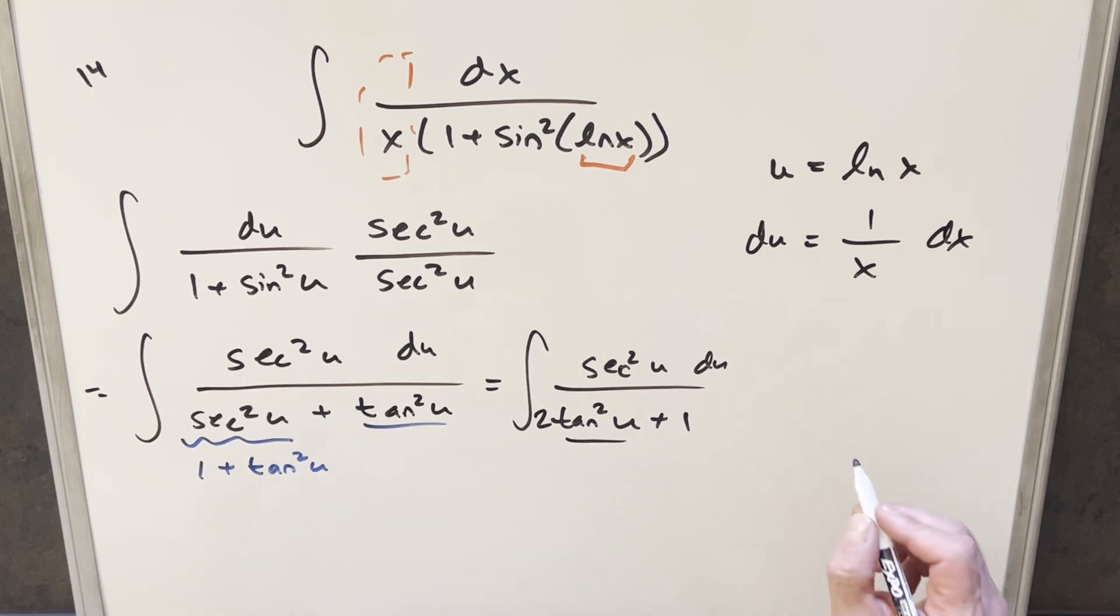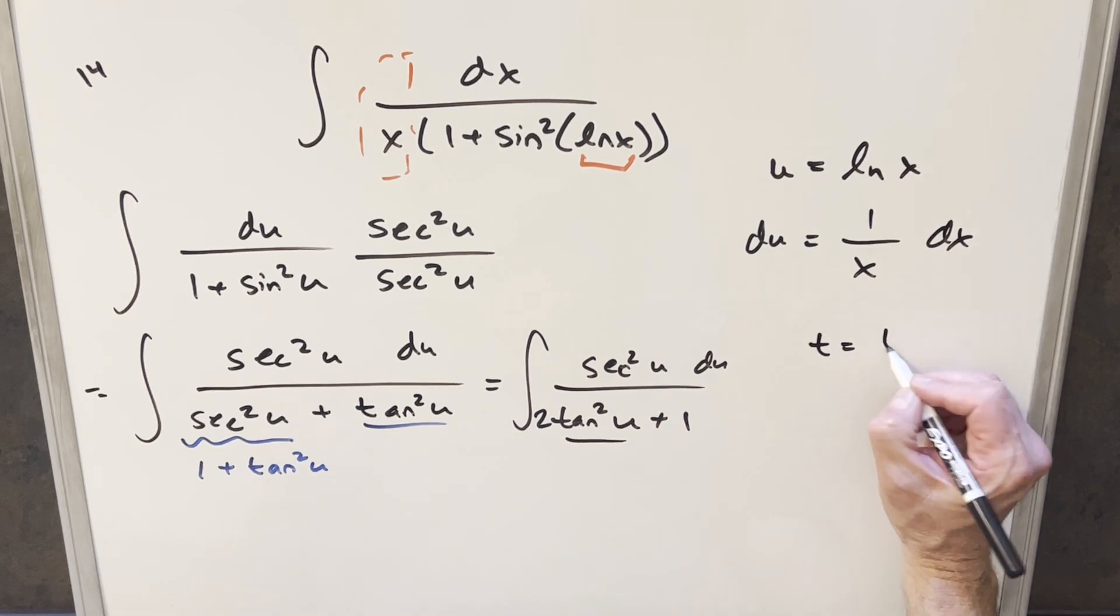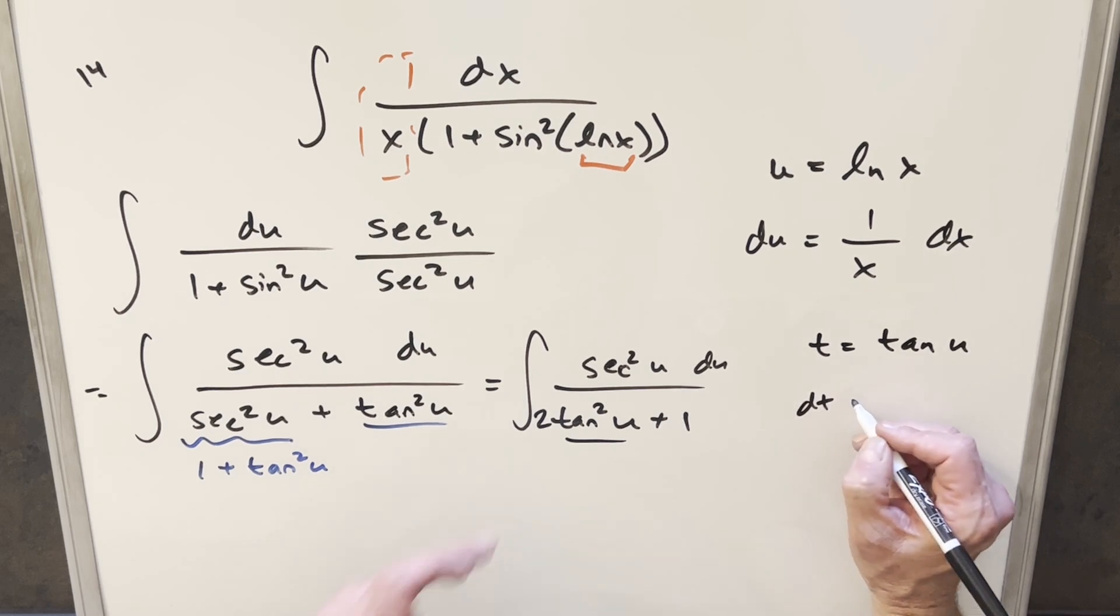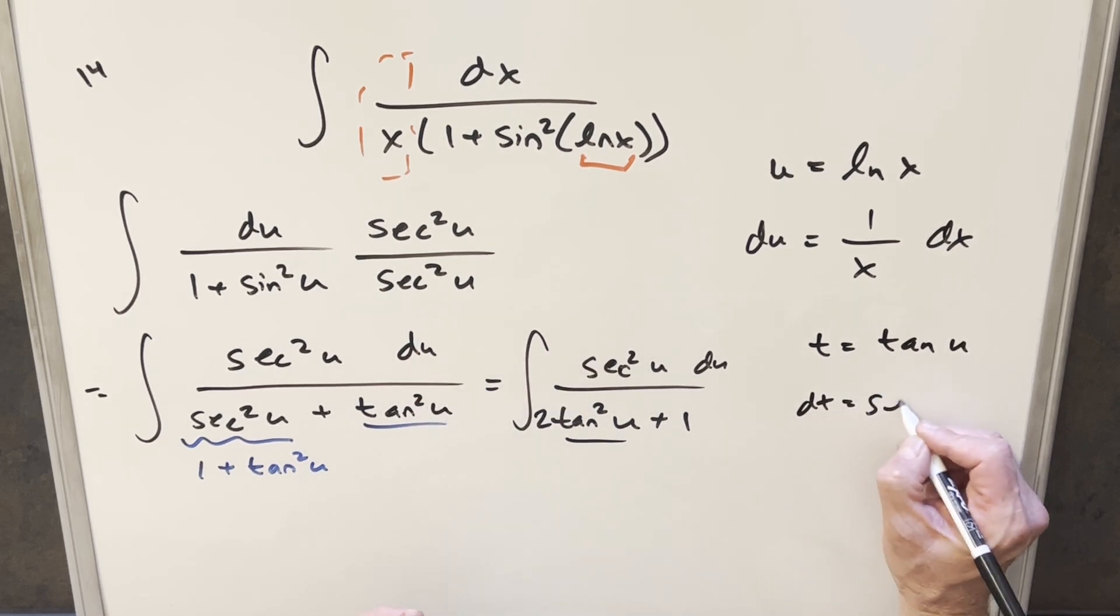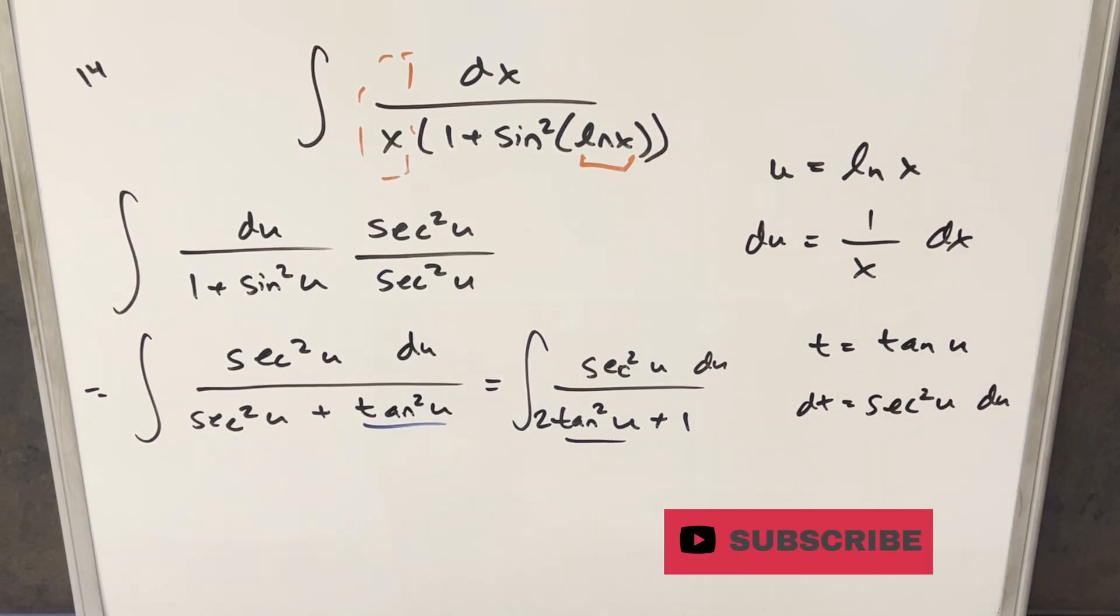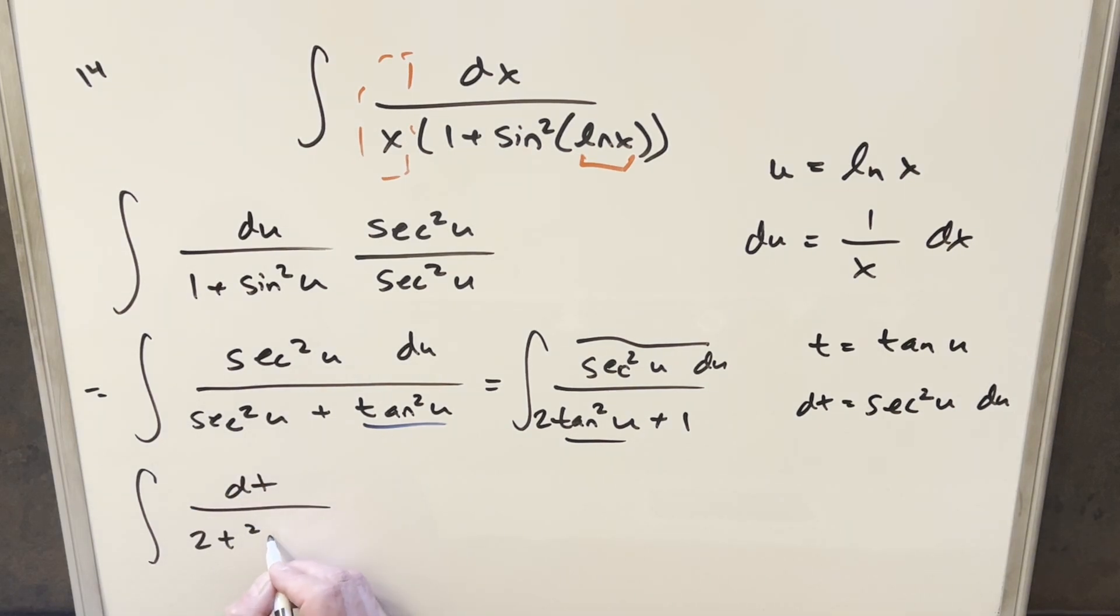And now we can go ahead and do this. So we'll do the substitution for tangent. I'm going to call t equal to tan of u. I'll take the derivative, and that's going to be exactly what we have here. So for dt, we're going to have secant squared u du. And now doing this substitution, this whole thing is going to be our dt in the numerator, and then this is going to reduce down to just 2t squared plus 1.